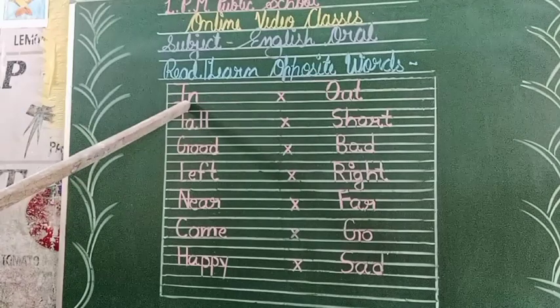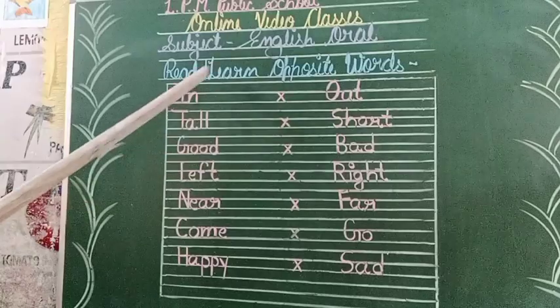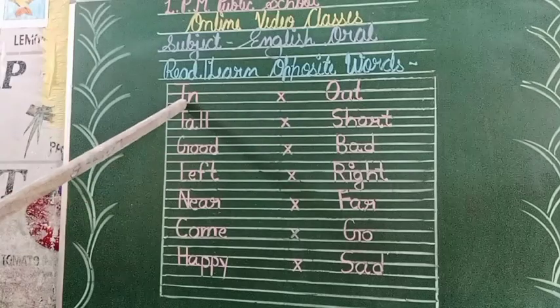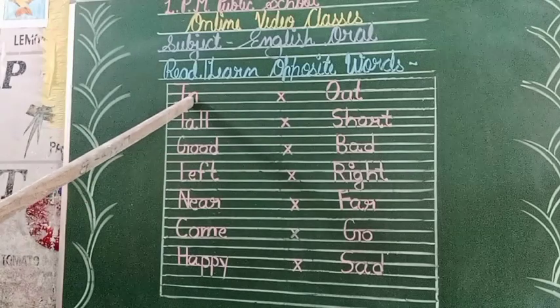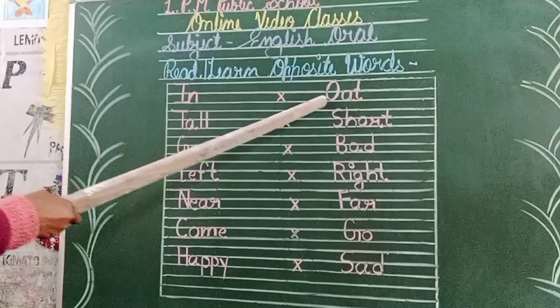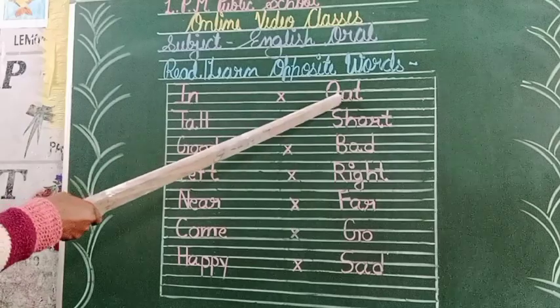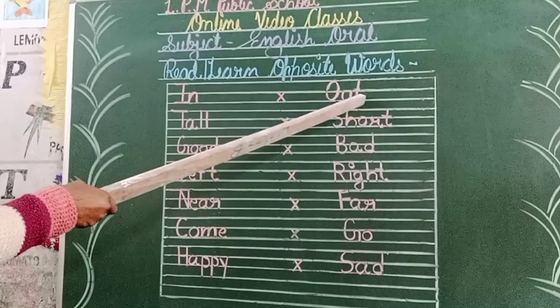In — out. Spelling of 'in': I-N, in. Spelling of 'out': O-U-T, out. O-U-T, out.